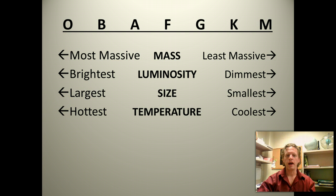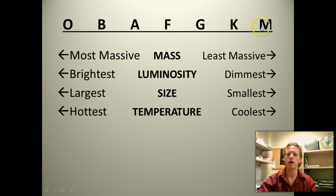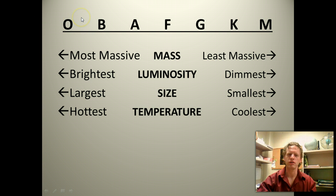The temperature: just like these other things, the most massive, the brightest, and the biggest stars are also the hottest. O-type stars are incredibly hot — over 30,000 Kelvin. Our sun is only about 5,800 Kelvin, and M-type stars can be around 3,000 Kelvin. So the range goes all the way from 3,000 Kelvin to over 30,000 Kelvin. By the way, you can roughly double that number and that's about the temperature in Fahrenheit.